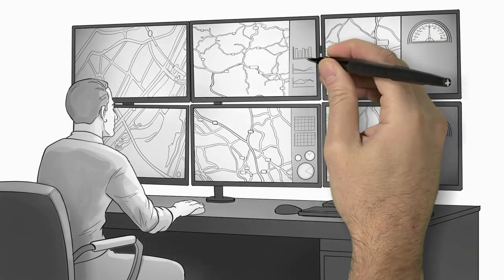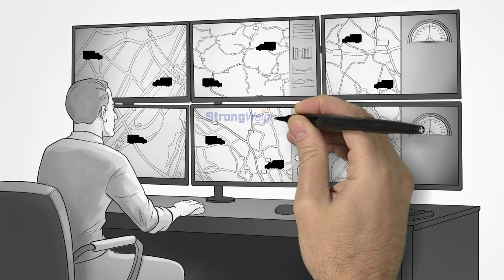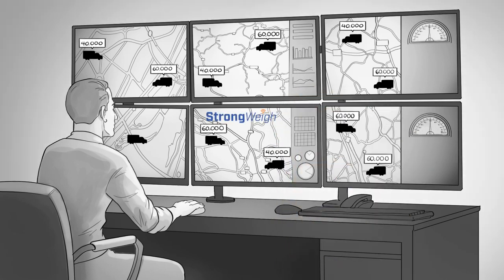By adding Strongway's real-time scale data to the power of telematics, you know where your trucks are and what they weigh at any given time. So you can see and be notified instantly of pickup and delivery, or even unscheduled weight changes during a trip.